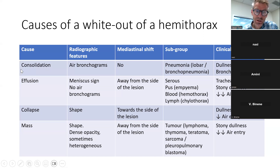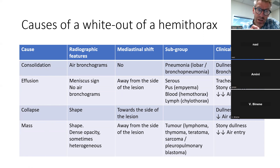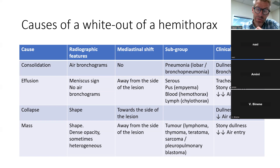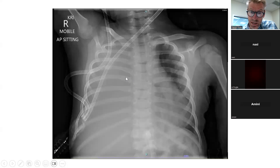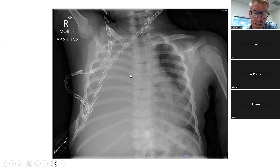There are only four things that give you a white-out of a hemithorax: consolidation, effusion, collapse, and a mass. When looking at the X-ray, you can determine which is most likely and rule out others. With consolidation, the key radiographic feature is that you should see air bronchograms — the air in the bronchi going to the periphery. In this X-ray, there are no air bronchograms, making consolidation very unlikely.